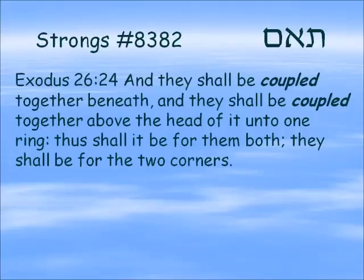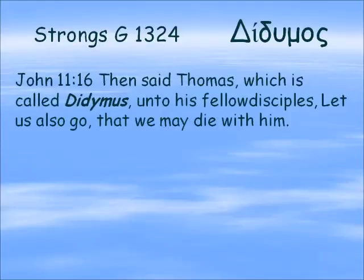There is a verb root, Te'am, which is used to describe the boards and sockets as they were put together for the Mishkan. Exodus 26:24: 'And they shall be coupled together beneath, and they shall be coupled together above the head of it unto one ring. Thus shall it be for them both — they shall be for the two corners.' It's interesting that one of the disciples is named Thomas. He has the root in his name for being a twin. John 11:16: 'Then said Thomas, which is called Didymus.' Didymus is the Greek word that means twins. So Thomas is his Hebrew name — it means twin — and he is called Didymus in Greek because he is a twin.